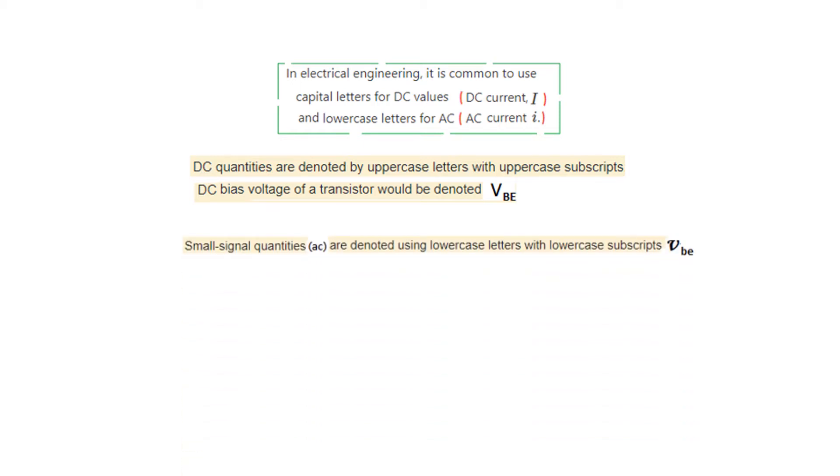But if the signal is AC, then the same parameter will be written as lowercase letters: small v, small b, and small e.